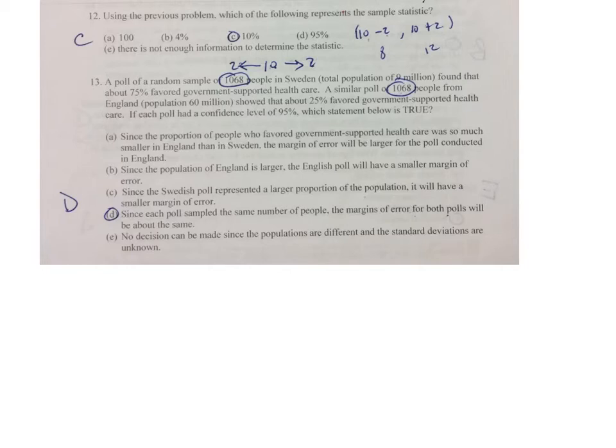Notice I put ten in the middle, two to the right, two to the left, which gives me eight and twelve. So just refer back to number eleven. On number thirteen, you have a sample size of a thousand sixty-eight. So they both have a sample size of a thousand sixty-eight.